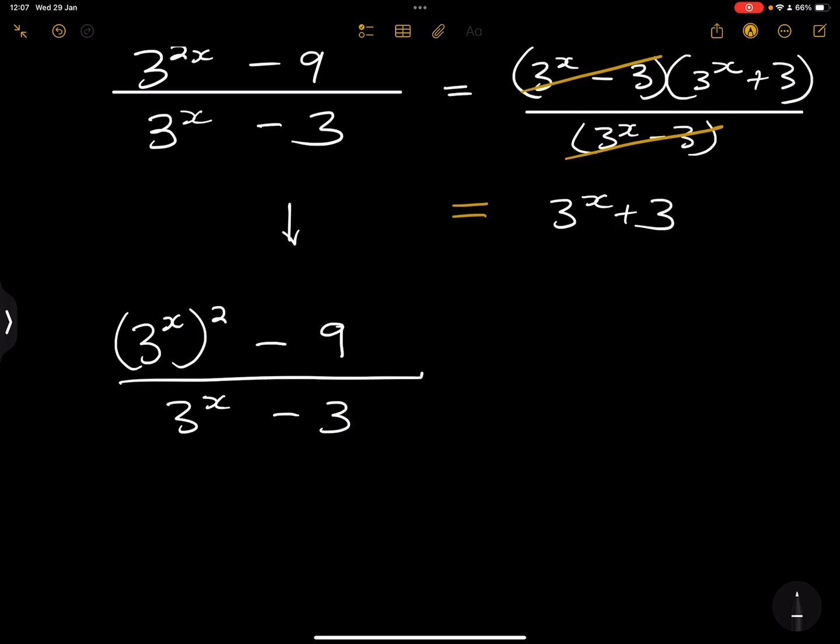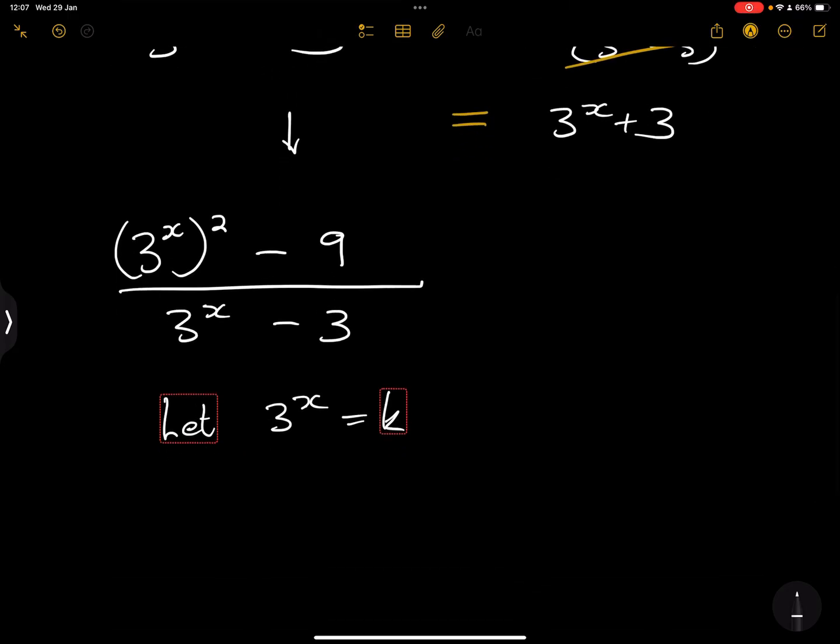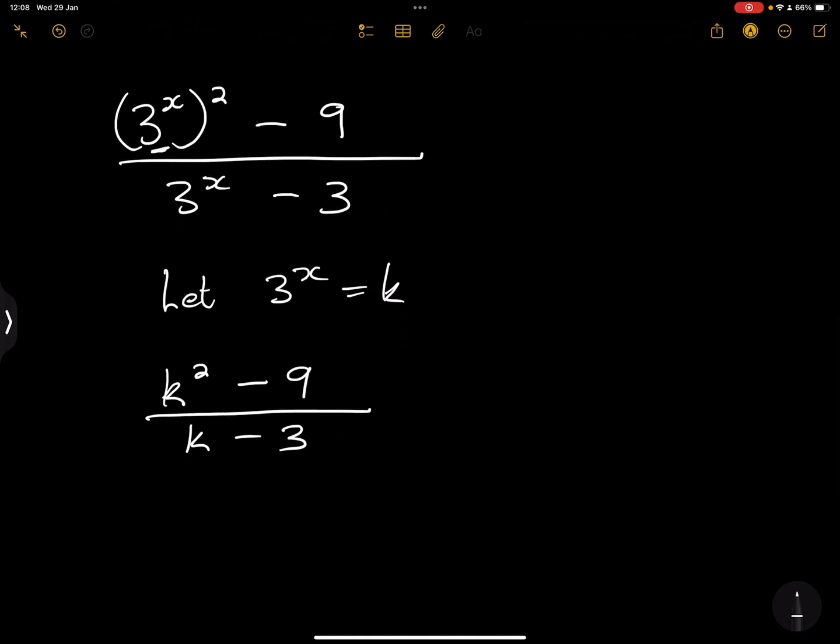Now you can say, well, in this case we've got 3 to the power x. Let's let 3 to the power of x equal to K. So that's K-method substitution. So what does that do? It gives us K squared, remember we've got 3 to the power x, that's K squared minus 9 divided by K minus 3.